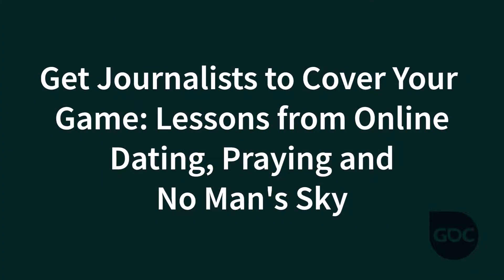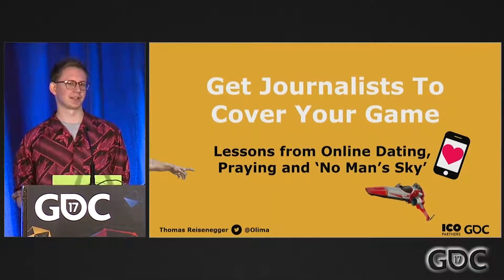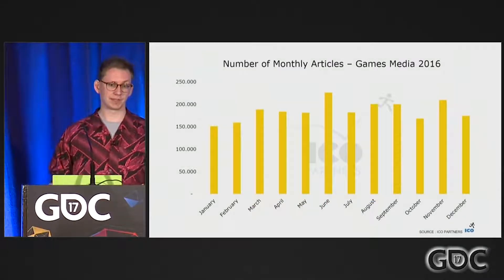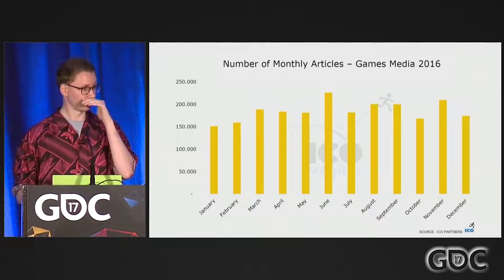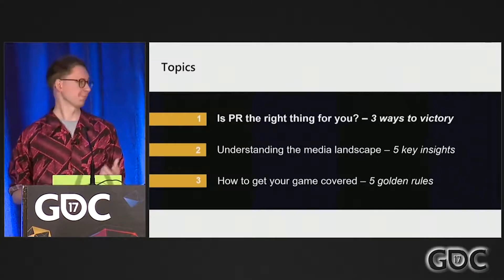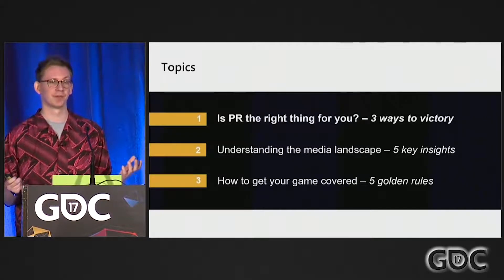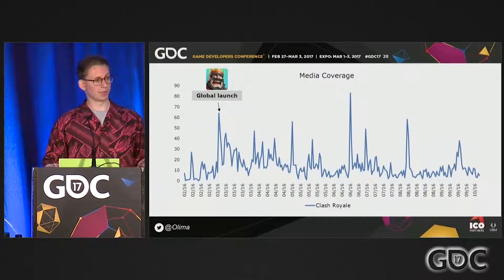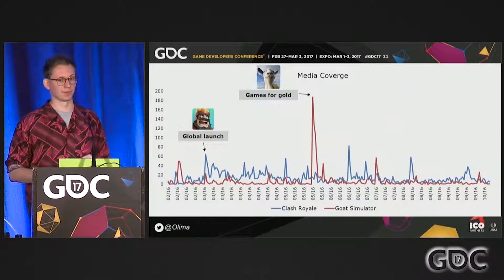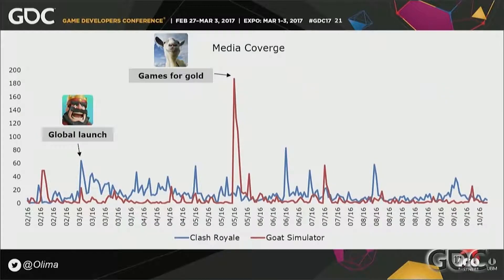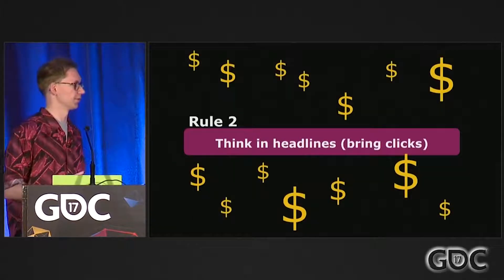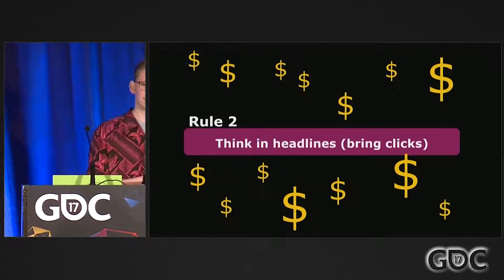The second talk is called 'Get Journalists to Cover Your Game: Lessons from Online Dating, Praying, and No Man's Sky.' Having a game that runs is only a small part of being a successful independent developer — there are many other parts of the process that sit outside of building the game, and marketing is one of them. I picked this one because it's a compact, shorter talk that covers many different techniques quickly so you can get a lot from it. Thomas Reisenegger gives us some useful stats to think about the space we are entering when we want to market our indie game, then gives tips on how to approach marketing to various parties to get maximum cut-through and hopefully get our games featured on news sites.